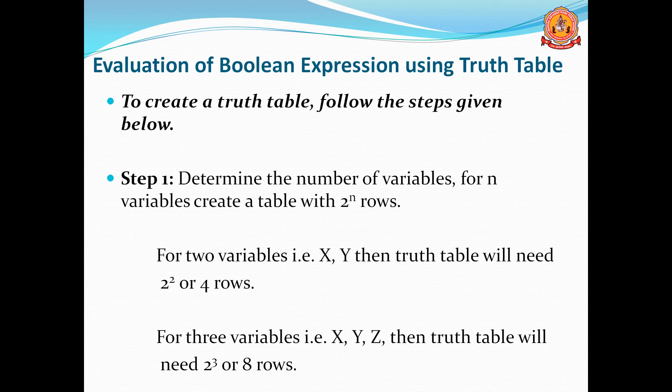Evaluation of Boolean expression using the truth table. If you want to create the truth table for any variables or any statements, you have to follow certain steps. The first step: determine the number of variables. We have to see what is the total number of variables — two, three, four, or five. When there are n variables, we have to create 2^n rows, covering all possible combinations.